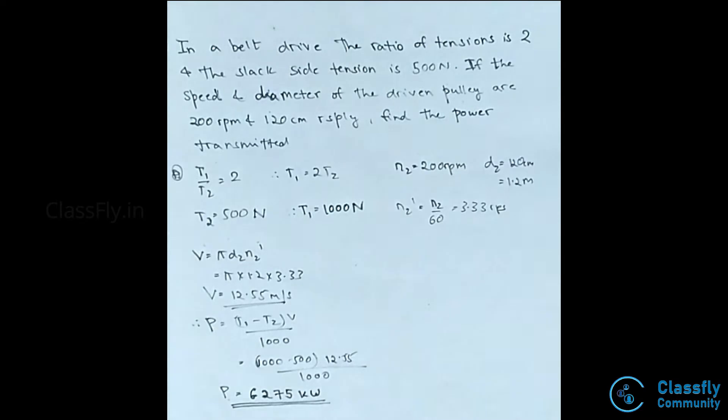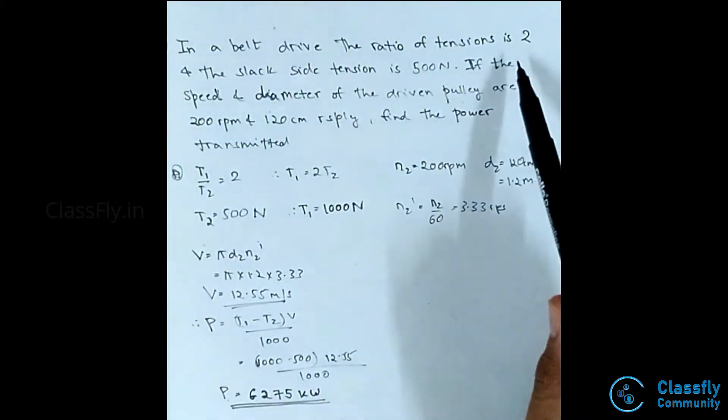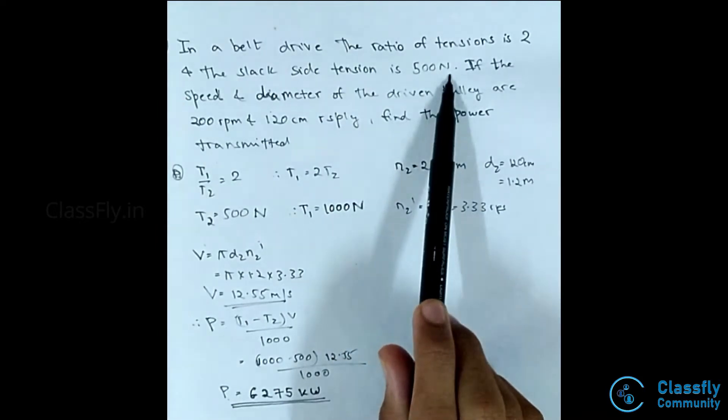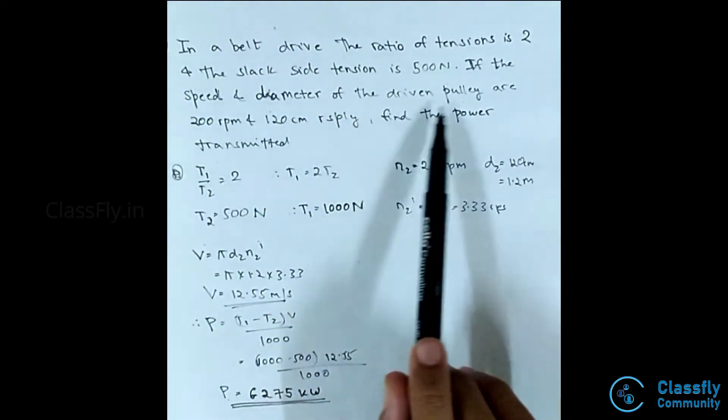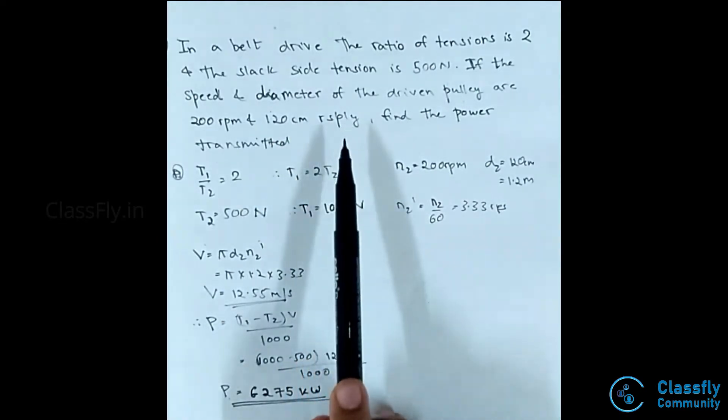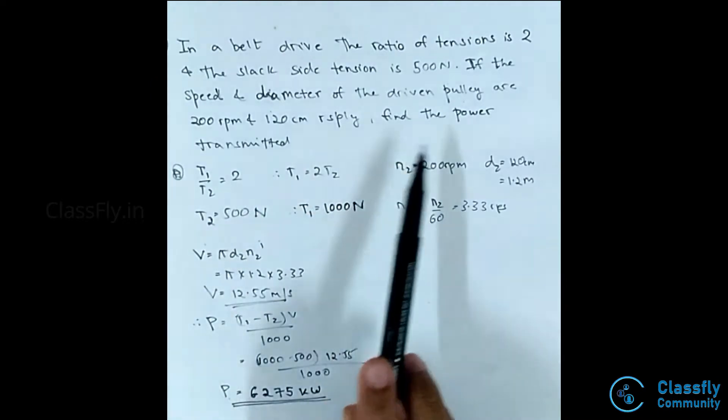Hi guys, today let us study numericals on the belt drive system. In a belt drive, the ratio of tension is 2 and the slack side tension is 500 newtons. If the speed and diameter of the driven pulley are 200 rpm and 120 centimeters respectively, find the power transmitted.